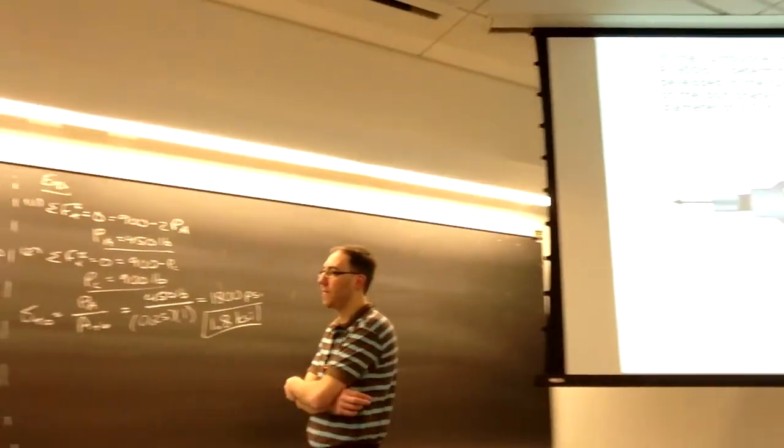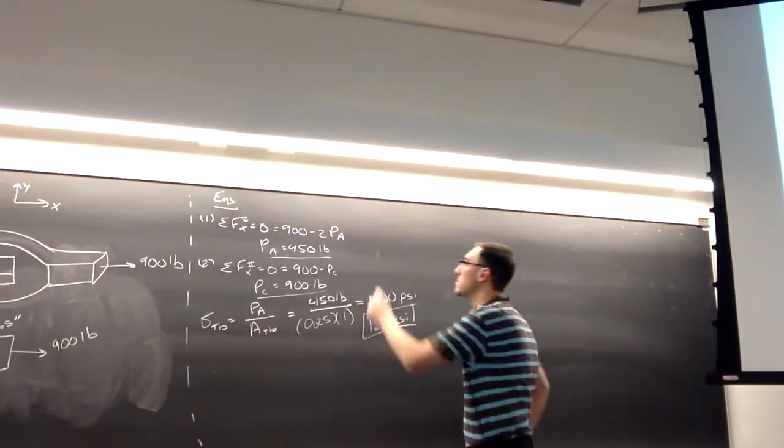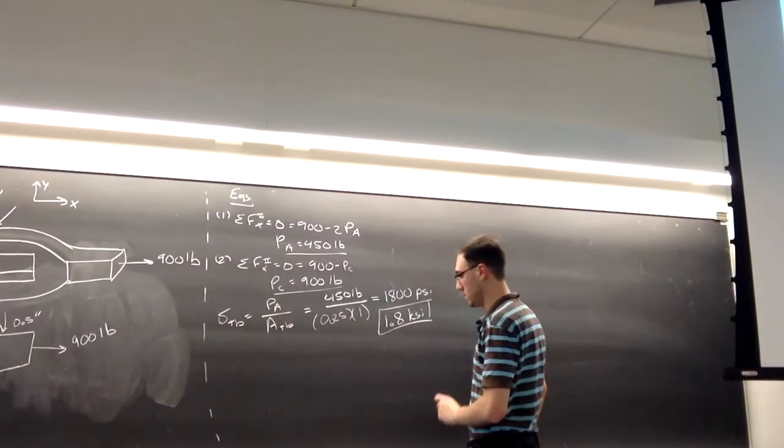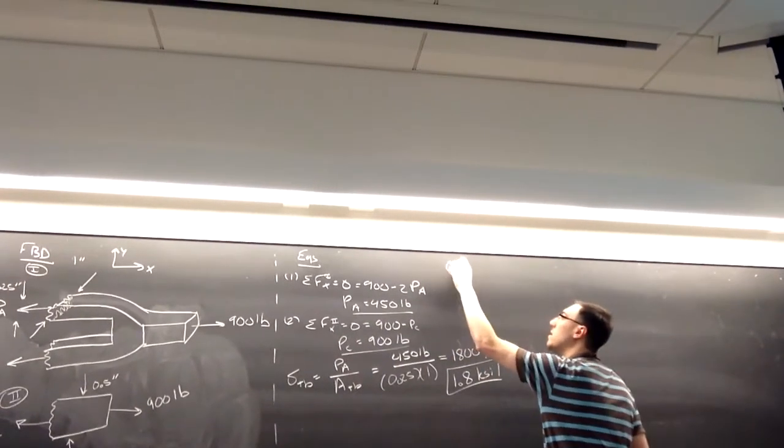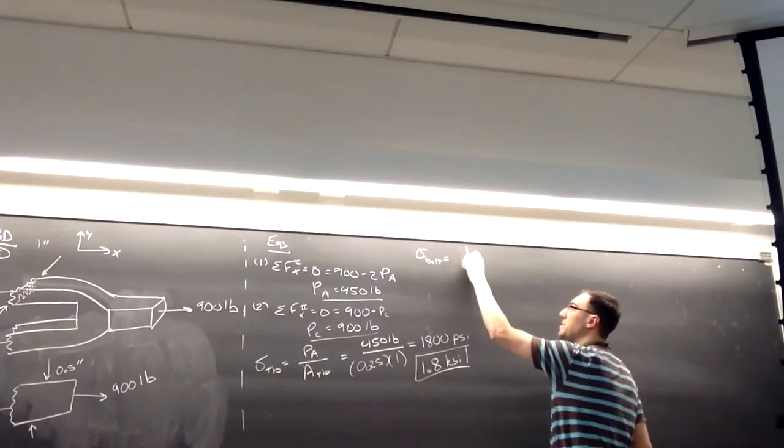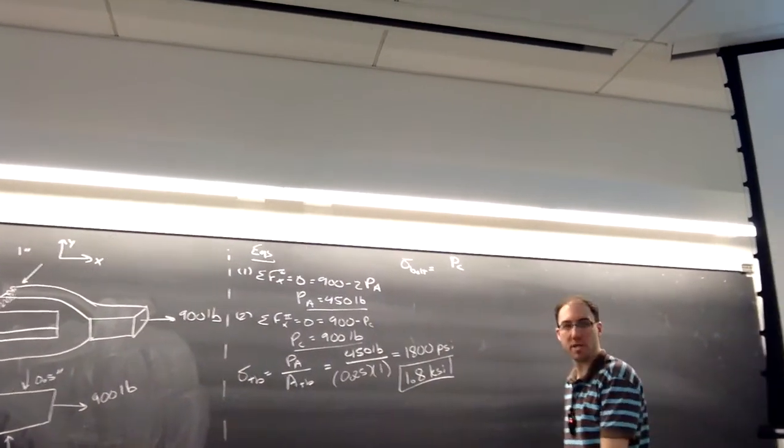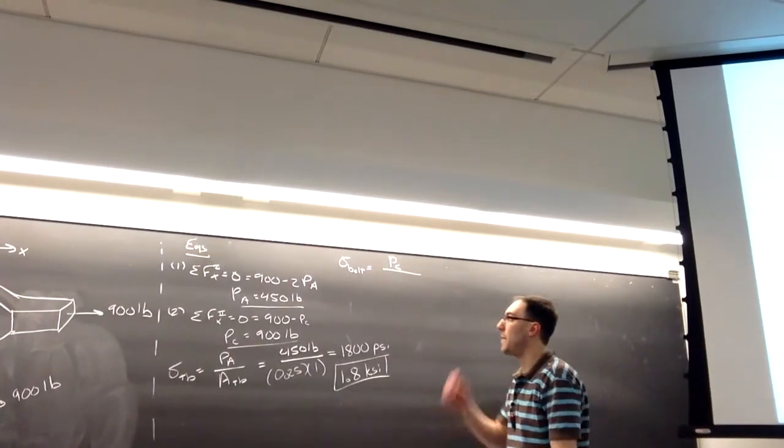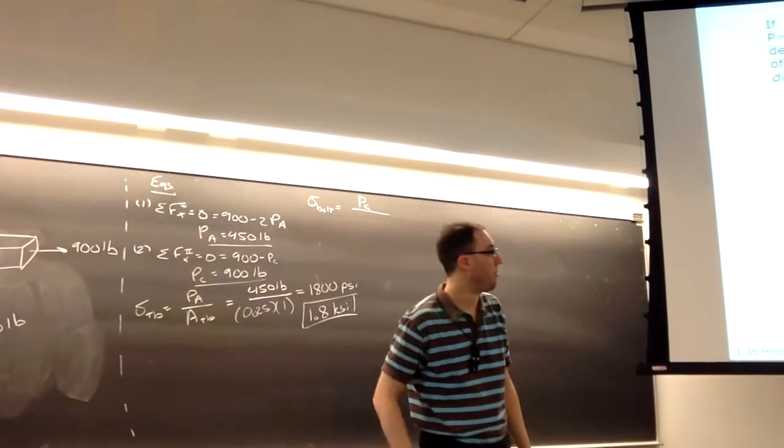All right, so now I can move on. I can find the stress in the bolt. This will be the stress, the internal force in the bolt, which was Pc, divided by the cross-sectional area of the bolt. So how do I calculate the cross-sectional area of the bolt? So again, that's going to be the cross-section of this face now.